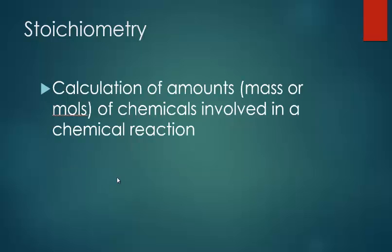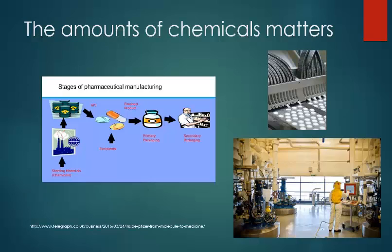Stoichiometry is the calculation of amounts of chemicals involved in a chemical reaction. Those amounts can either be mass or moles, although mass is going to be the more practical unit since we can actually measure it on a chemical balance in the laboratory.